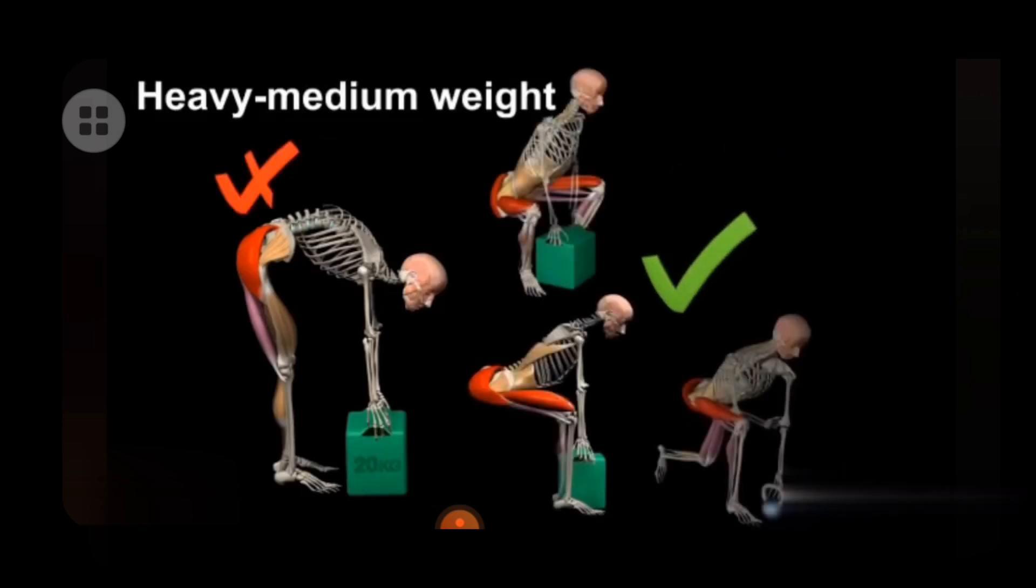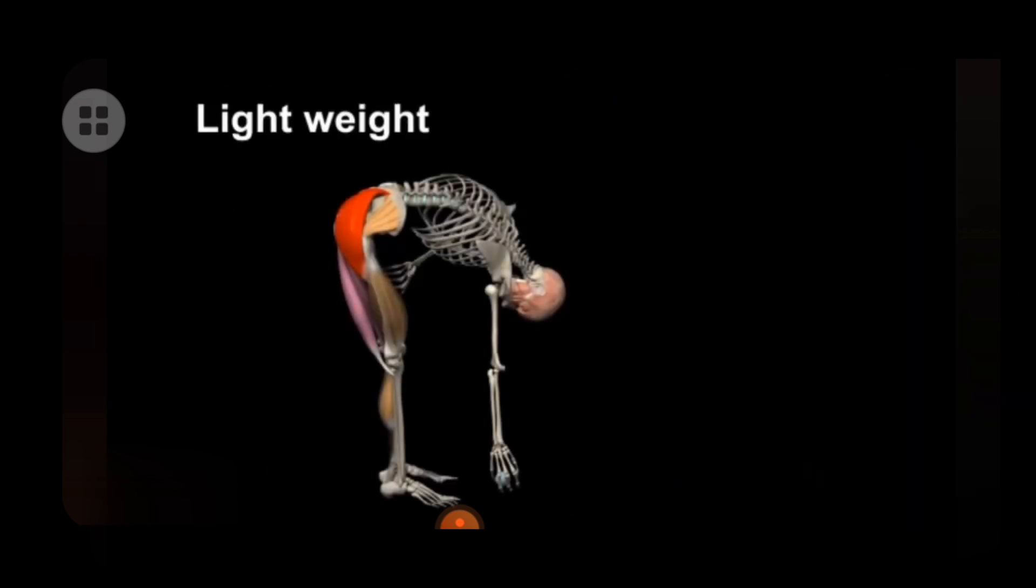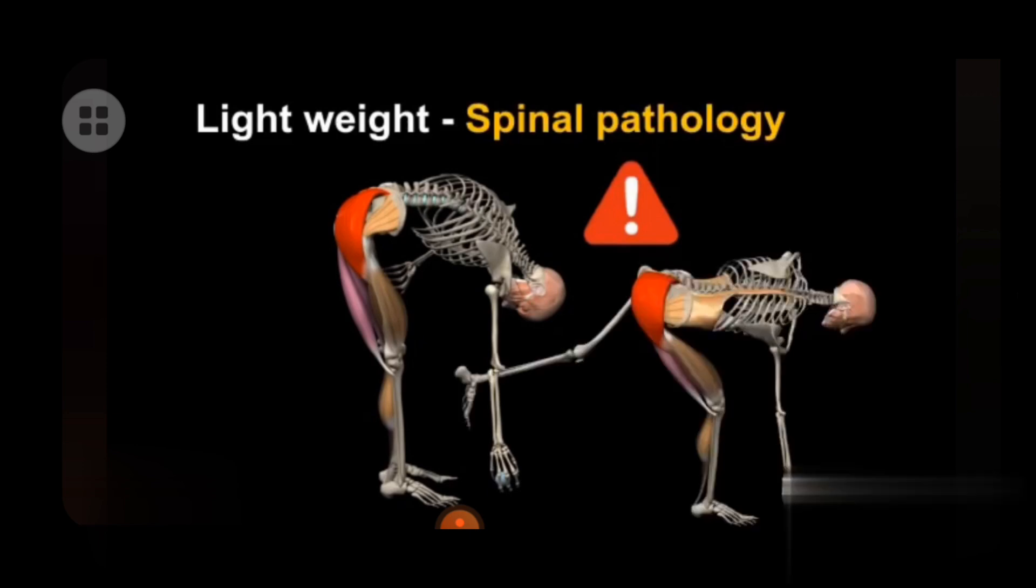For lifting medium to heavy weight, keep your back straight. For a lightweight object, we need and should use segmental rounded bending. In a pathological spinal condition, it is recommended to maintain a straight back.